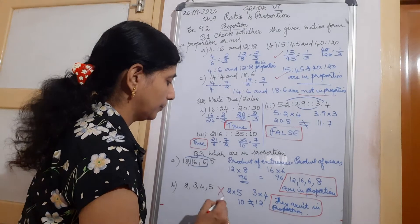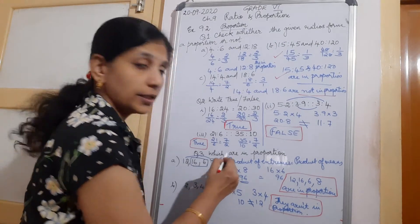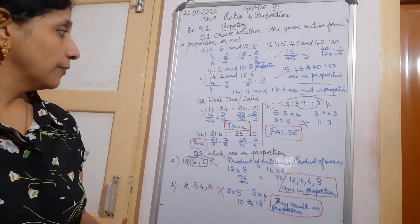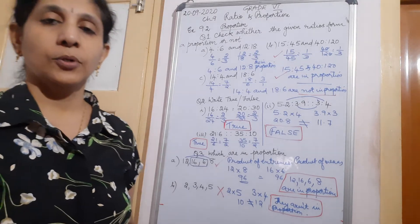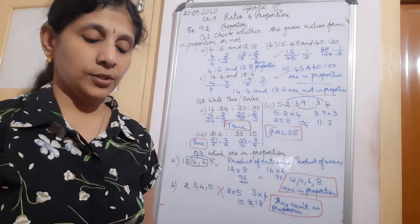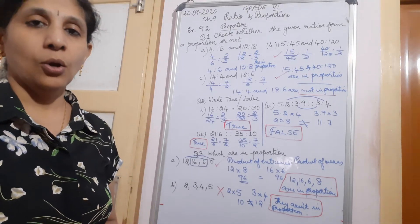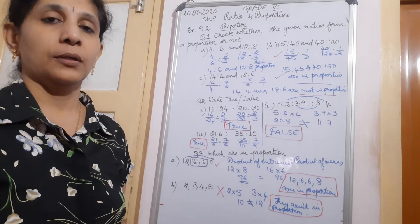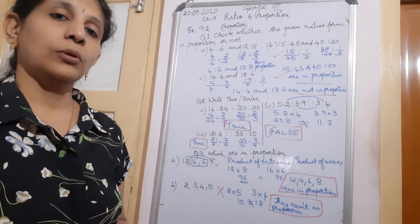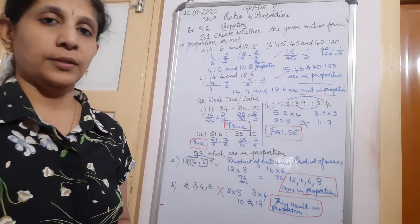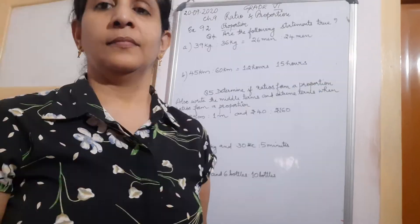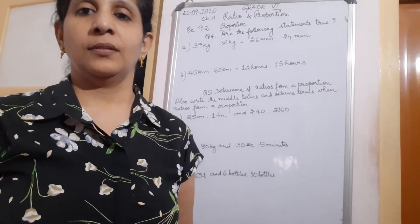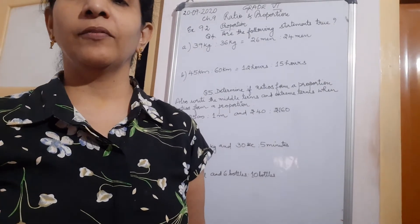So this set is not in proportion, while the previous one is in proportion. To summarize how to find it: the product of extremes must equal the product of means, or the first two numbers as a fraction must equal the other two as a fraction. Now we continue with proportion.